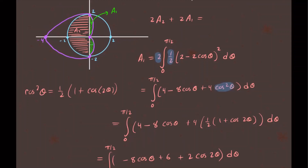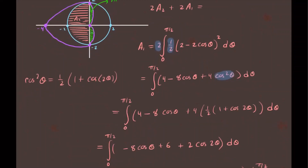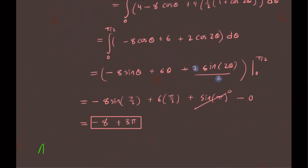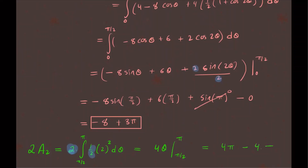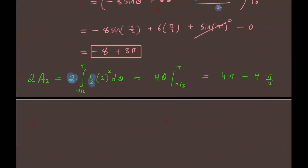Now for A2, we integrate the circle r equals 2 from π/2 to π, and double it. So 2 times A2 equals 2 times the integral from π/2 to π of (1/2)(2 squared) d theta. The 2 and 1/2 cancel leaving 4, so we integrate 4 d theta: that's 4 theta evaluated from π/2 to π, giving 4π minus 2π, which equals 2π.